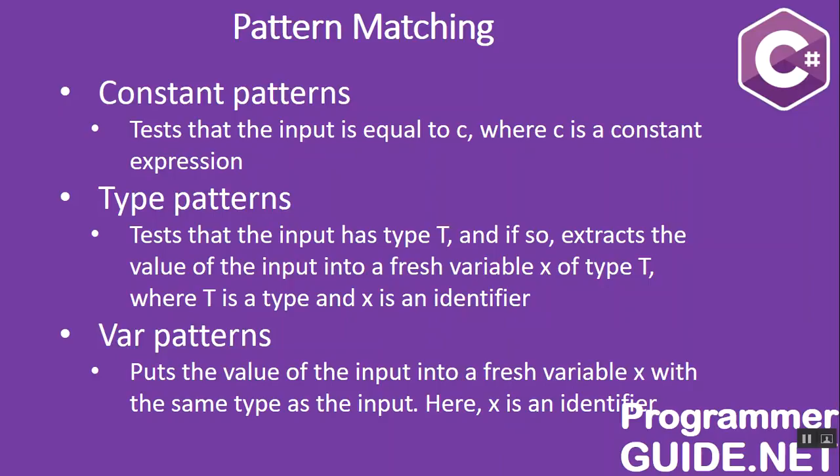Constant patterns test that the input is equal to C, where C is a constant expression. Type patterns test the input as type T, and if so, extract the value of the input into a fresh variable X of type T — here T is a type and X is an integer. Var patterns put the value of the input into a fresh variable named X with the same type as the input, where X is an identifier.